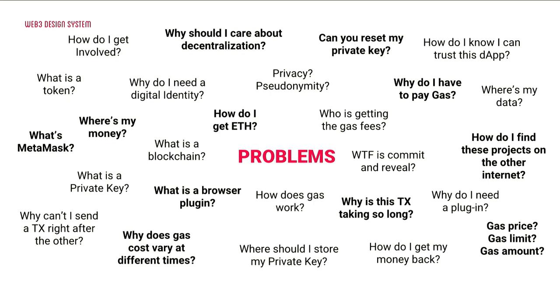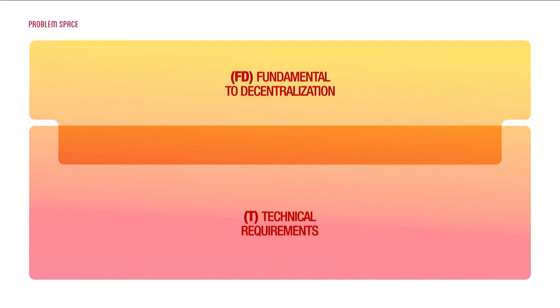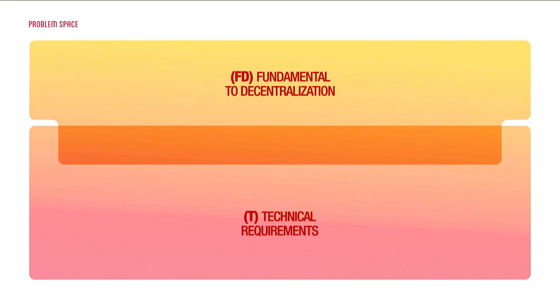We've interviewed all the people in the space who have users or DApps in production — front-end developers, designers, product people, anyone with experience of users. We don't have components yet; we're finishing the research phase. But we have a mental framework about how to think about Web3 problems — putting order into the chaos that exists in Web3 today. We asked interviewees what problems or questions users have, and found two main categories: those relating to technicalities of the blockchain, and those relating to fundamental aspects of decentralization.